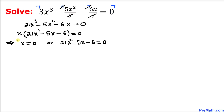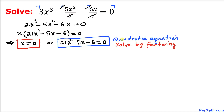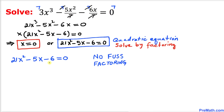We can split them: x equals 0, or the other factor 21x² minus 5x minus 6 equals 0. So one of our solutions is x equals 0. Now let's focus on this other equation — it is a quadratic equation and we are going to solve it by factoring.